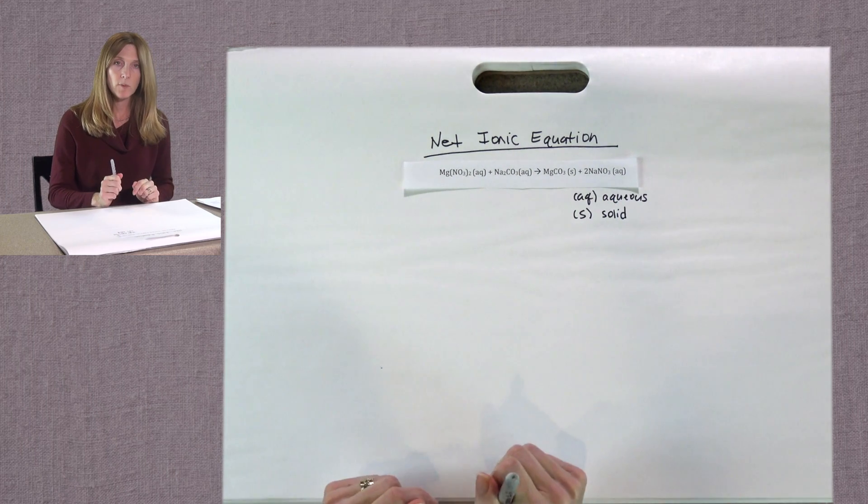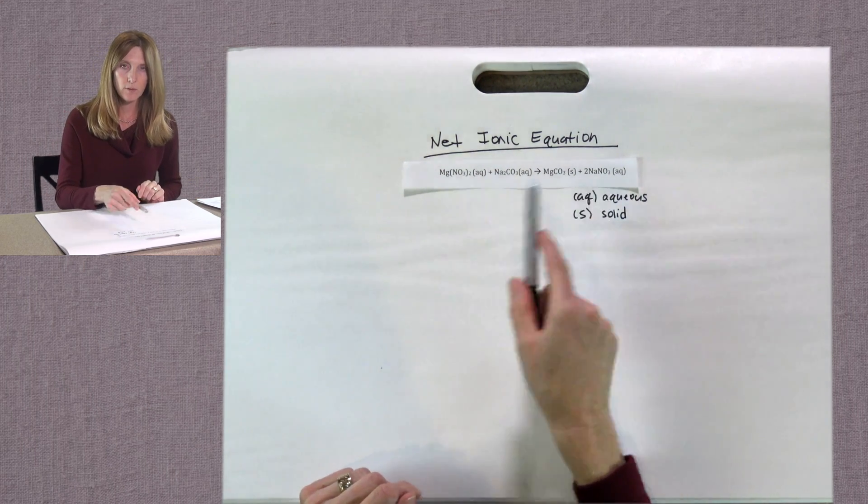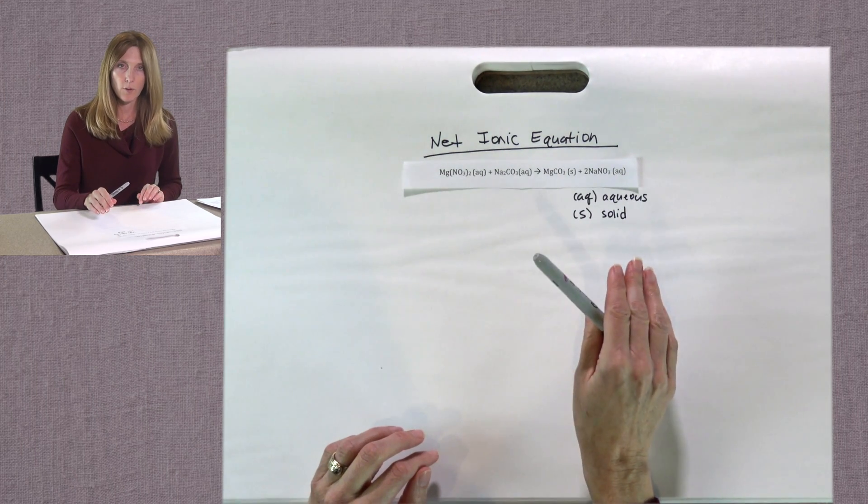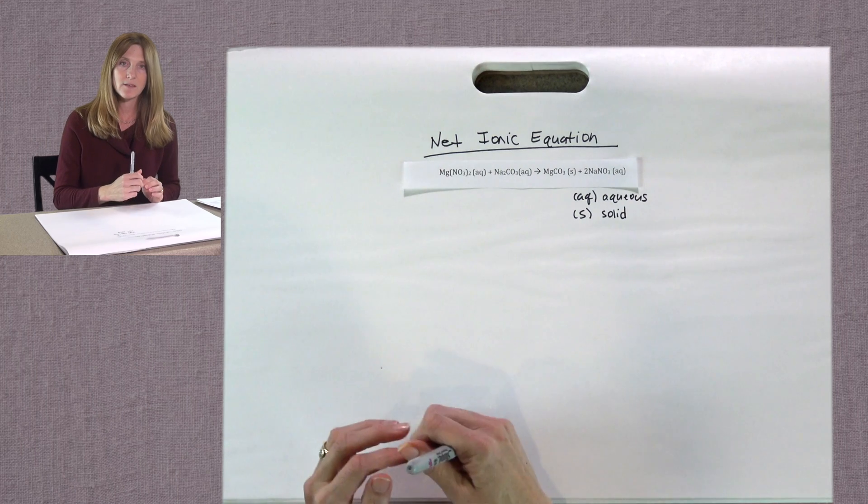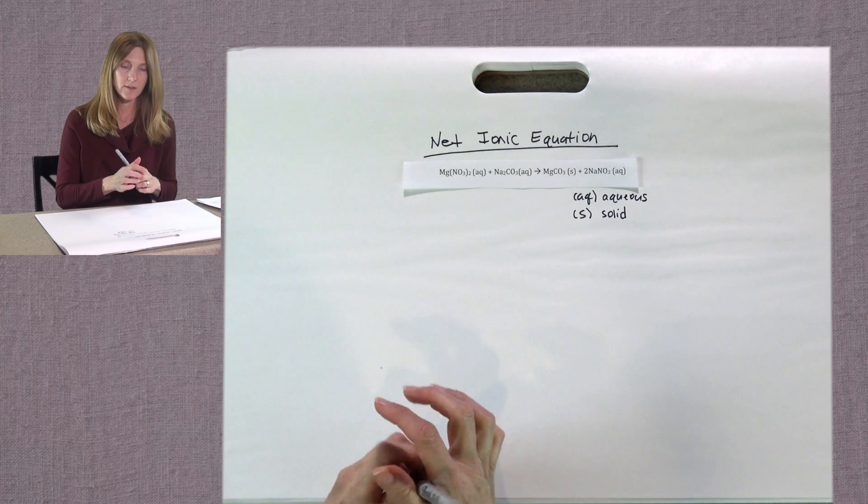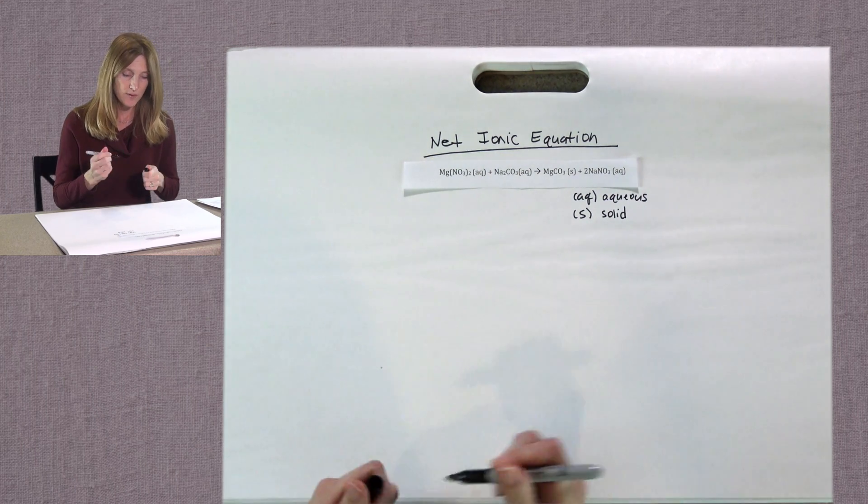So the next thing we want to do is rewrite this chemical equation showing all of the ion components. Anything that is aqueous, remember they will come apart in water. So we're going to write those ions separately. Let me show you how this is done.